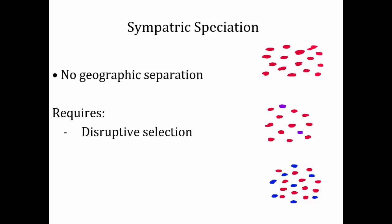In sympatric speciation, the two species arise in the same location — there's no geographic separation. It requires a combination of disruptive selection and assortative mating. When these two things happen together, there's a chance that you get sympatric speciation. Assortative mating is when like individuals choose like individuals to mate with — there has to be some choosiness. It was thought not too long ago that sympatric speciation was really unlikely, but it turns out it's probably fairly common, although not nearly as common as allopatric speciation.